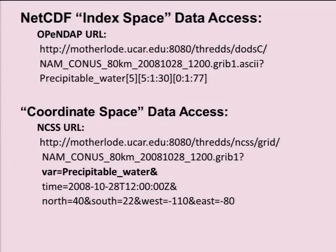An important thing we recognized was that our older technology — the NetCDF API and OpenDAP — is all index-based data access. You're basically slicing and subsetting multidimensional arrays. The new, better thing to do is to work in coordinate space. The OGC WMS and WCS protocols work in coordinate space, so the user doesn't have to understand the array indexing. He can say what he wants, and the server knows what that means and serves out the subset.